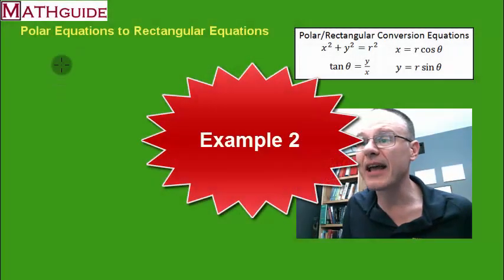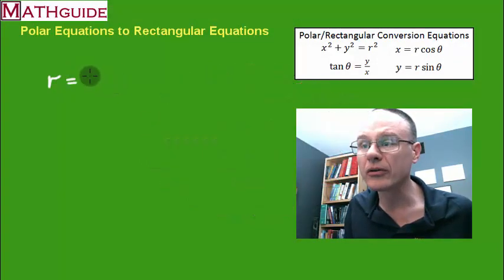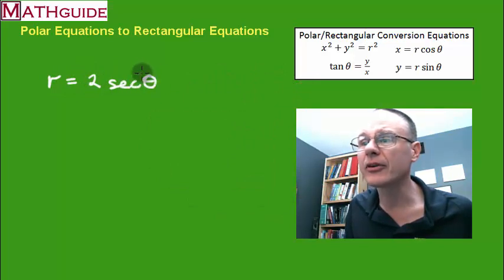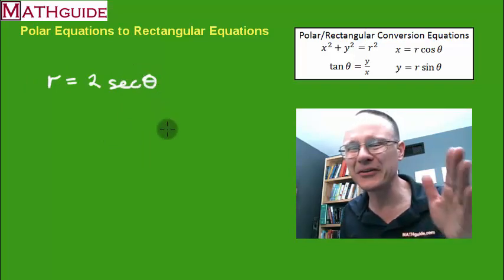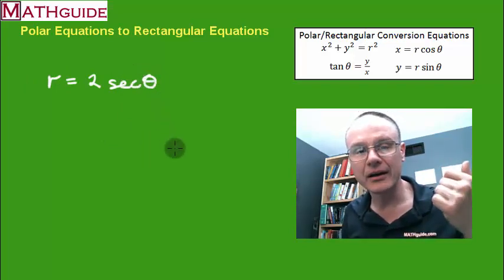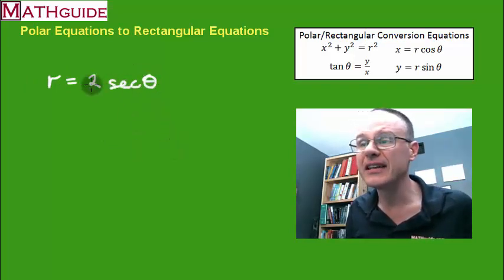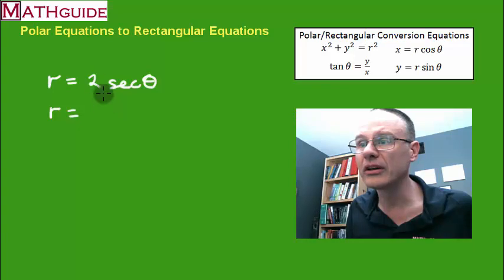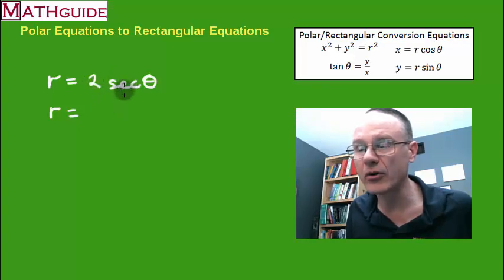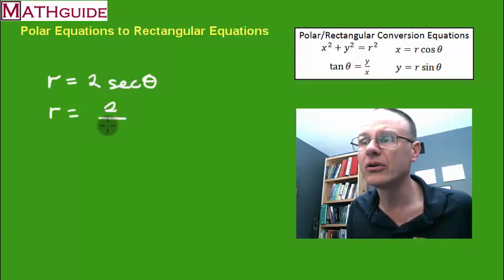Here comes example two. Let's say we were given this polar equation r equals 2 secant theta. First of all, secant, let's stick with cosine, sine, and tangent. So secant is just the reciprocal function of cosine. So really, I've got 2 times 1 over cosine, which is 2 over cosine theta.